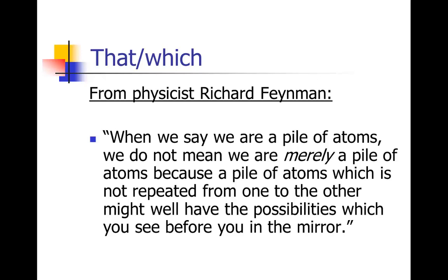Just to show you that even some of the best writers get these little grammar things wrong, the late physicist Richard Feynman was a wonderful writer, also a wonderful researcher. I'll be using examples from his writing in this course of examples of good writing. But here's something he had written. When we say we are a pile of atoms, we do not mean we are merely a pile of atoms, because a pile of atoms which is not repeated from one to the other might well have the possibilities which you see before the mirror. Notice there's two witches in there. Notice they're not set off with commas. Those are actually essential pieces. So actually both of those should have been thats. Even the best of us get these things wrong occasionally, but pay attention, try to get them right when you can.